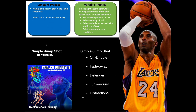Constant practice has a couple of important characteristics. If you're first learning the motor skill for the very first time — if you've never taken a jump shot before or never played basketball — you probably want constant practice because you need to get the basic skills before you start making it more challenging. Constant practice is normally best when you want to get really good at a skill in the initial stages of learning. However, in a basketball game, do you ever get an opportunity to take that same jump shot in the same spot under the same conditions? Never. So constant practice would probably not be good for application to other situations.